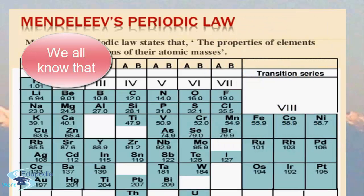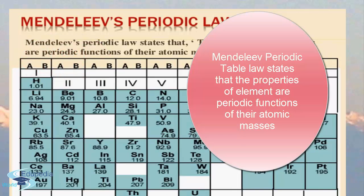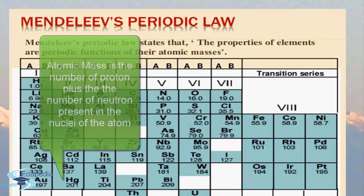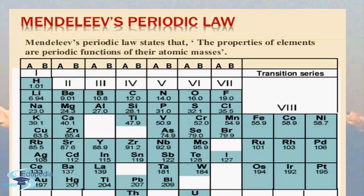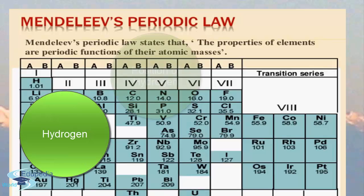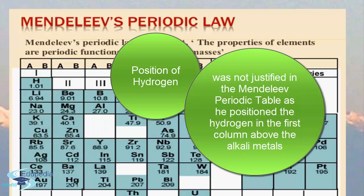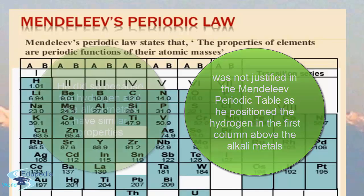The Mendeleev periodic table law states that the properties of elements are periodic functions of their atomic masses — that is, all elements were arranged according to atomic masses, not atomic numbers. Atomic mass is the number of protons plus the number of neutrons present in the nucleus. The position of hydrogen was not justified in the Mendeleev periodic table, as he positioned hydrogen in the first column above the alkali metals.